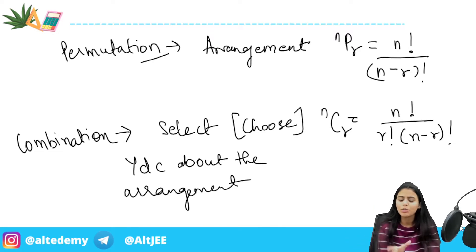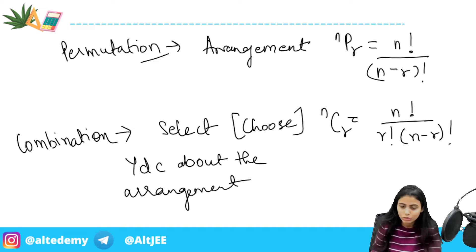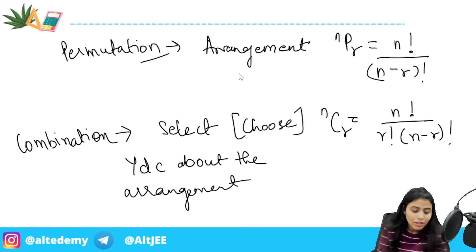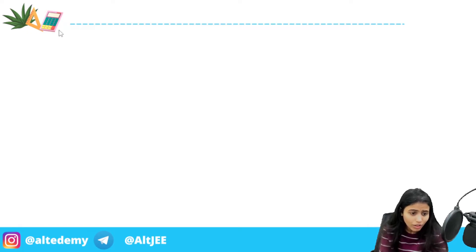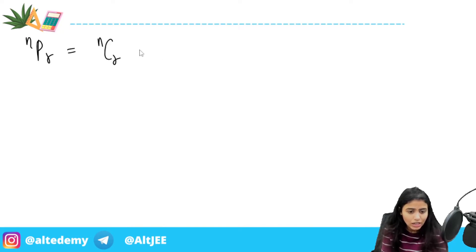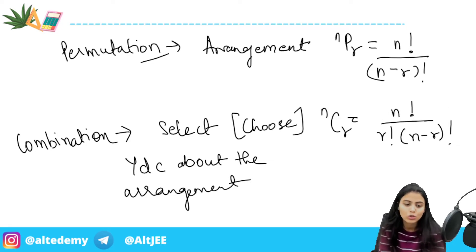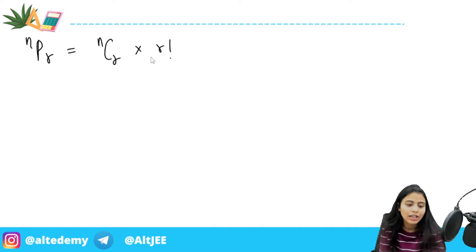If you think you're going to leave this topic, you're only leaving it temporarily — and when you know it works as a benefit for you, why leave it? Nothing is tough; all you need is to give it time. Now, the relation between nPr and nCr: nPr equals nCr times r factorial. This is because when you multiply nCr by r factorial, the r factorial cancels and you get nPr.